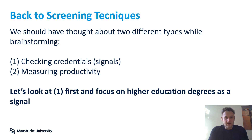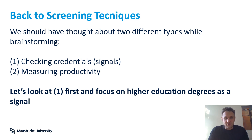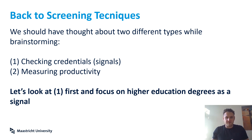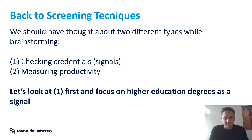There are two different screening approaches: checking credentials — looking at a CV, high school diploma, or things someone has done — which are signals; and directly measuring productivity through assessment tests, assessment centers, or tasks that let you observe productivity. In the credentials case you don't directly observe productivity but look at something only obtainable by people with a certain productivity level.